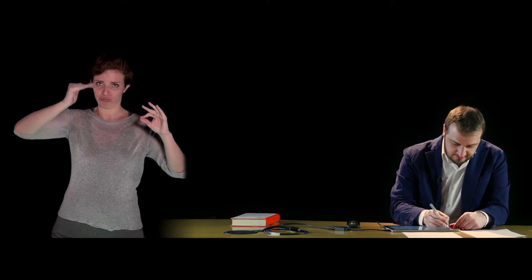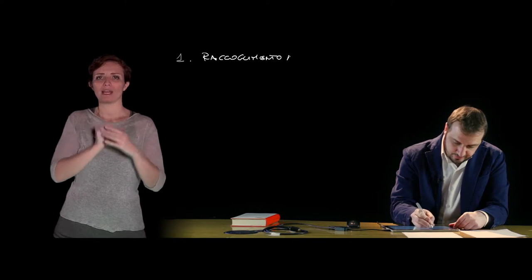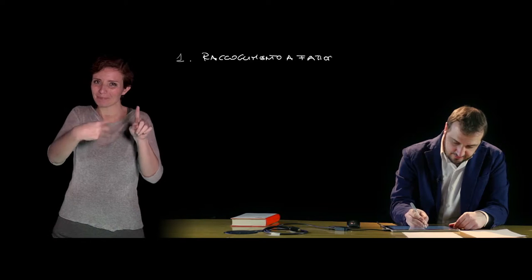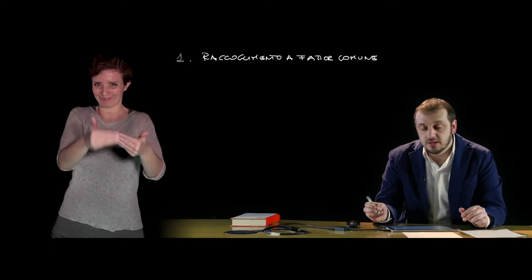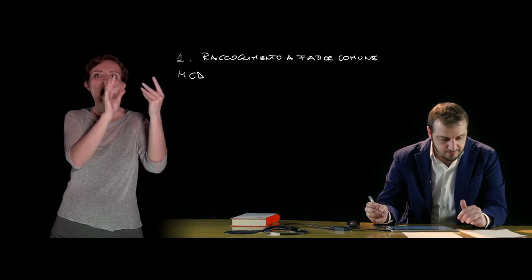La prima, quella più semplice, è il raccoglimento a fattore comune, poi abbiamo il raccoglimento parziale, le tecniche che utilizzano i prodotti notevoli, la scomposizione di particolari trinomi di secondo grado, e infine le tecniche che richiamano la regola di Ruffini. Questa prima tecnica richiede, come primo step, di ricercare il massimo comun divisore tra i monomi che costituiscono il polinomio che deve essere scomposto.